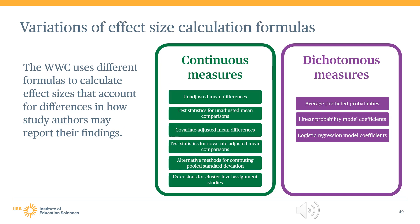The equations we just covered for Hedges G and Cox's index are general effect size formulas. However, the WWC uses different variations on these general formulas that account for differences in how study authors reported their findings. When calculating Hedges G effect sizes for continuous measures, the equations will vary depending on the type of information reported by study authors, as well as whether the study used individual or cluster-level assignments to conditions. Similarly, Cox's index equations can vary depending on the type of statistical information reported. Module 11 provides additional technical details for those interested in these variations.